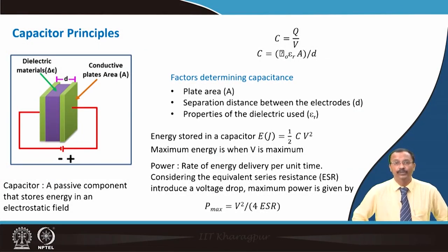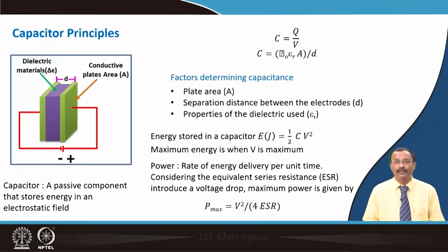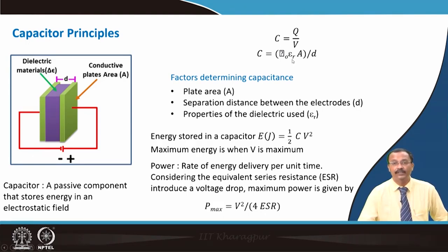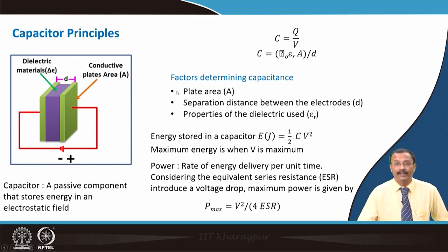The capacitor principle is probably well known. Capacitance is the ratio of stored charge to voltage, given by ε₀·εᵣ·A/d, where ε₀ is the dielectric permittivity in vacuum, εᵣ is the relative permittivity, A is the electrode area, and d is the separation between electrodes. From this equation, the factors that determine capacitance are electrode area and separation — smaller separation gives more capacitance — as well as the dielectric property εᵣ.